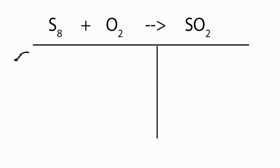So we have sulfur, and we have oxygen, and over here we have eight sulfurs and two oxygens. On this side we have one sulfur and two oxygens.